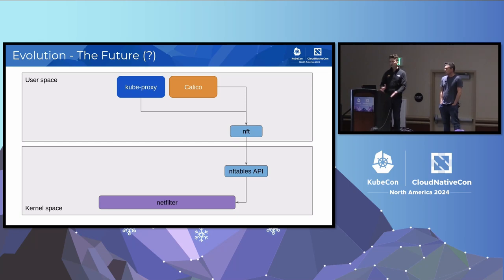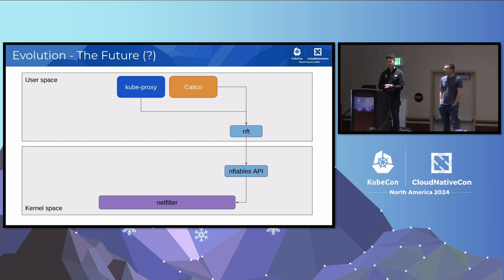Looking forward, this is how we see the future. iptables is going to be gone entirely and everybody's just going to be talking to nft. Red Hat Enterprise Linux 9 has already deprecated iptables and said it will be removed in the next release, which is coming in the next year, and we expect other distros to follow.